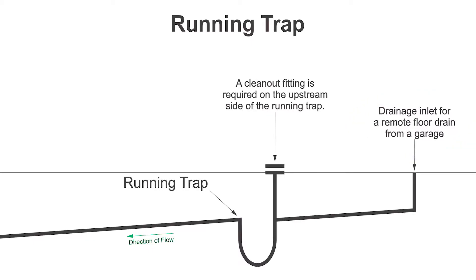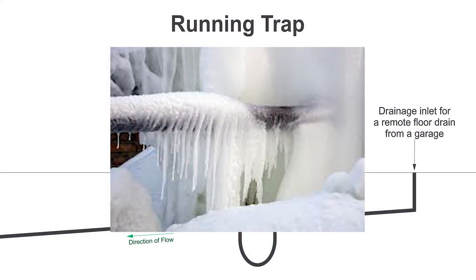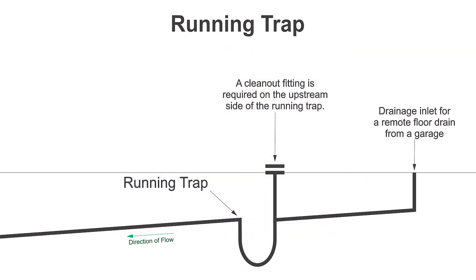The most common place you're going to see a running trap is a floor drain inside a garage. Ideally, we don't want to put the P-trap in the floor of a garage because many areas in Canada would be subject to freezing. So that P-trap would get potentially frozen solid in the garage and then it doesn't drain so well. If we have a running trap where the P-trap is inside the building envelope and we run into that, now the P-trap won't freeze because the house is warm.